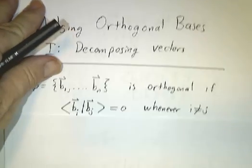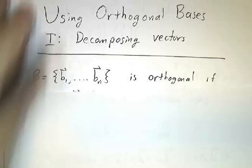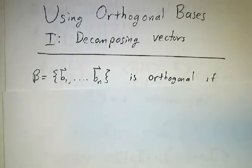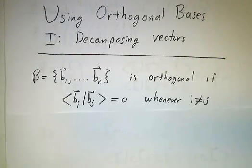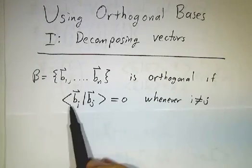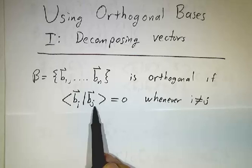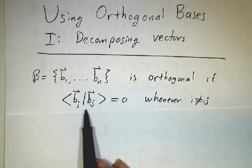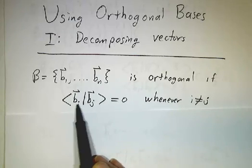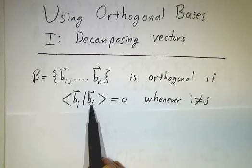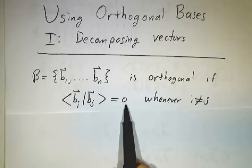To begin with, a set of vectors is orthogonal if any two different ones are orthogonal — that is to say, if you take the inner product of any two different vectors in the list, you get zero.